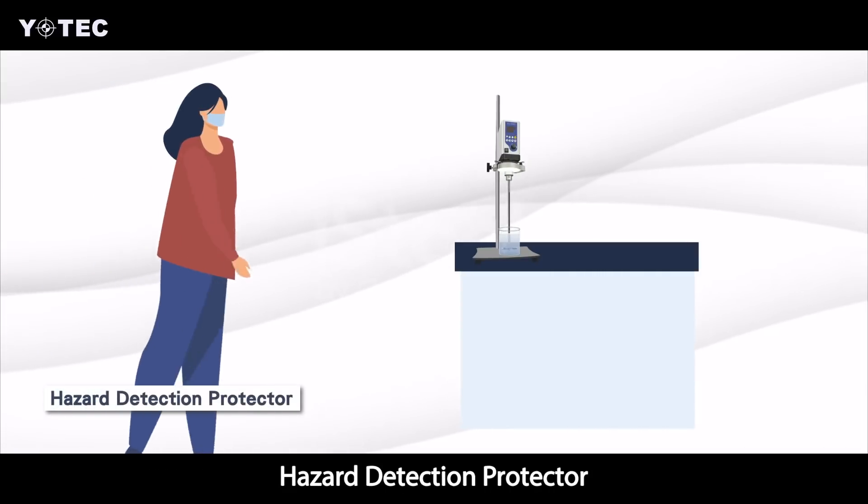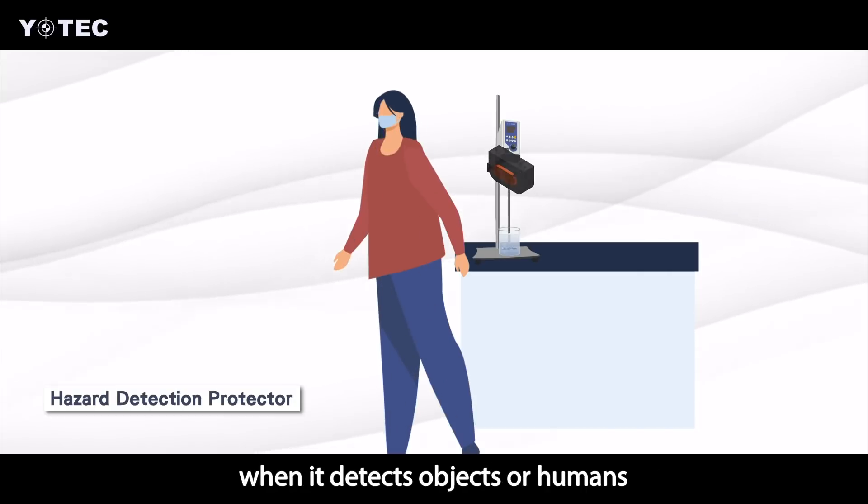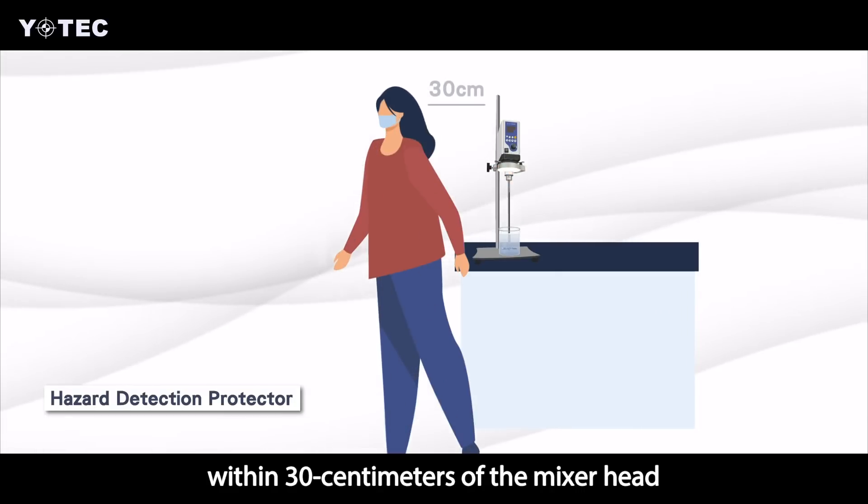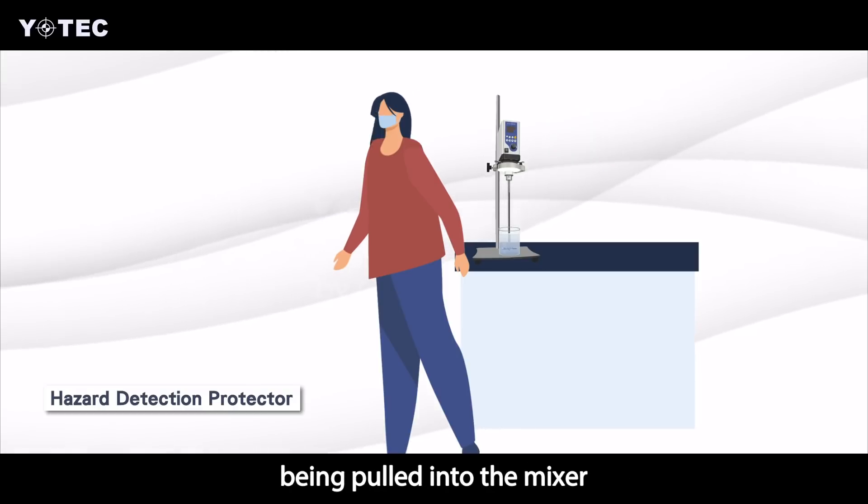Hazard detection protector. The hazard detection will stop the mixer when it detects objects or humans within 30 cm of the mixer head to avoid staff from accidentally being pulled into the mixer.